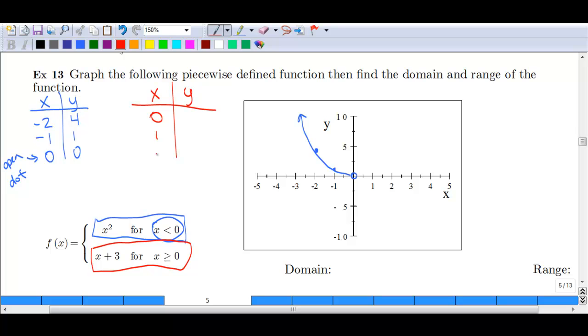And we'll pick 0, 1, and 2. So if you plug in 0, you get 3. You plug in 1, you get 4. You plug in 2, you get 5.